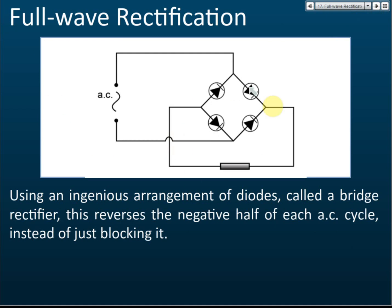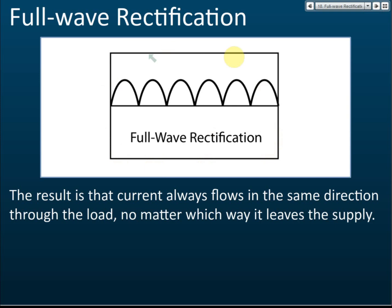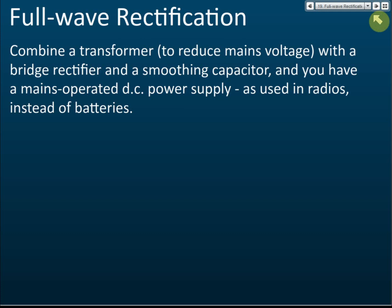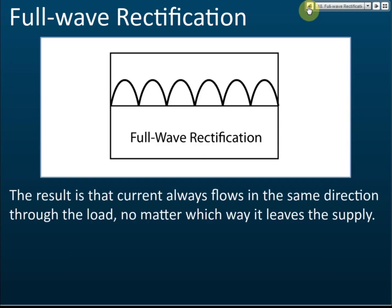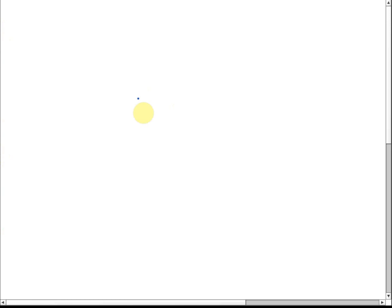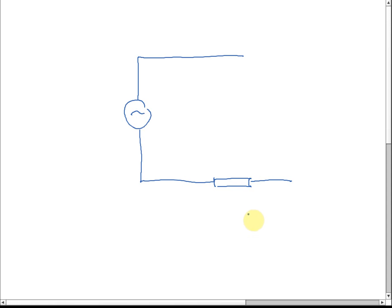By using the rectifier bridge we can convert alternating current to direct current with no energy loss and get a full wave rectification output. Another way to do full wave rectification is by using a transformer with two diodes. For exams, you must know how to draw the bridge rectifier — they may leave that part blank and ask you to complete the circuit to show how full wave rectification can be done.